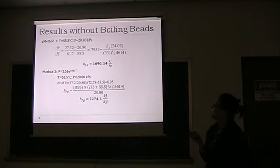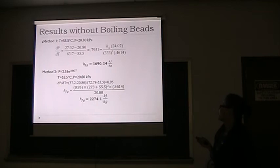Using the same method with boiling beads and the same temperature of 55.5, we have different pressure. The dP/dT is 0.795, giving latent heat 1690.14 kJ/kg. The second method gives dP/dT of 0.95, so the latent heat is 2481 kJ/kg.